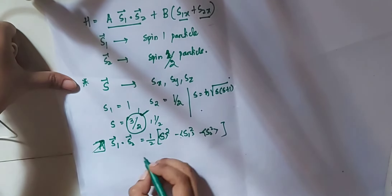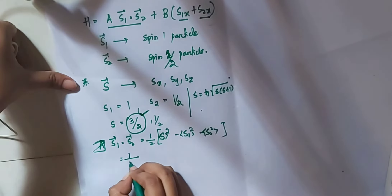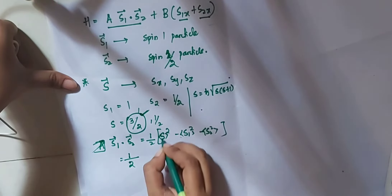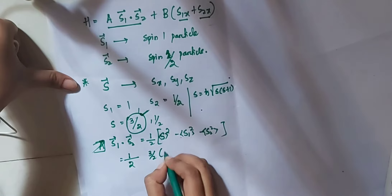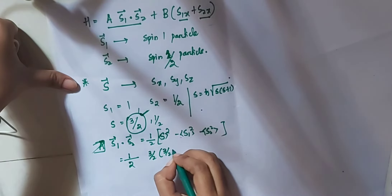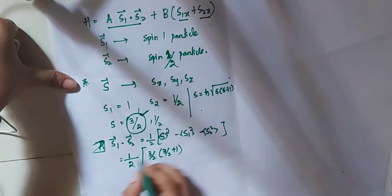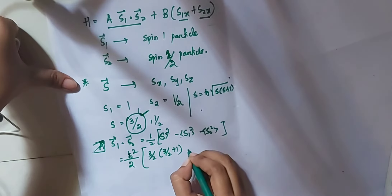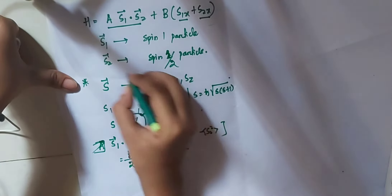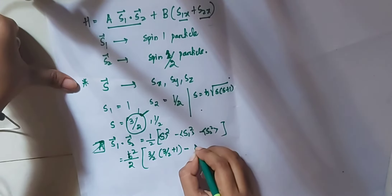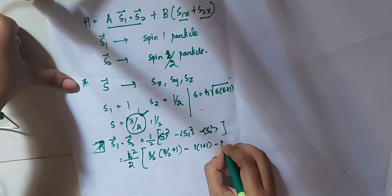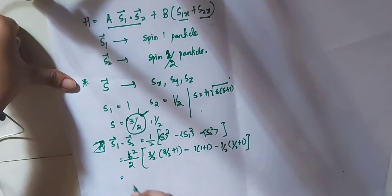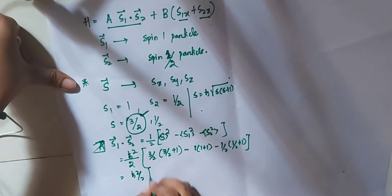Since we're looking for the largest eigenvalue, I take the largest total spin s = 3/2. Substituting: (1/2)[(3/2)(3/2+1)ħ² - 1(1+1)ħ² - (1/2)(1/2+1)ħ²], taking ħ² outside. So I get (ħ²/2)[15/4 - 2 - 3/4].